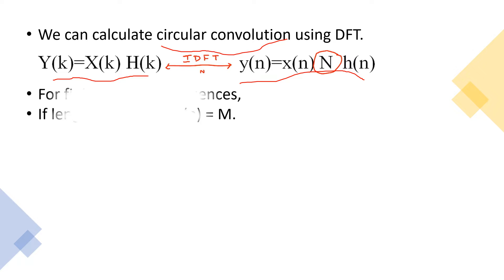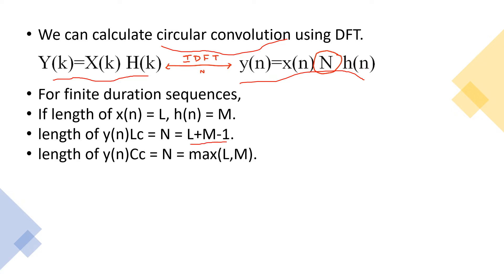For finite duration sequences, if length of x of n equal to L and length of h of n equal to M, where x of n is the input signal and h of n is the impulse response, the length of y of n output in linear convolution is equal to N equal to L plus M minus 1. Similarly, length of y of n in circular convolution is equal to maximum of L comma M. So the length of circular convolution and length of linear convolution are different. The length of linear convolution is greater than that of circular convolution.